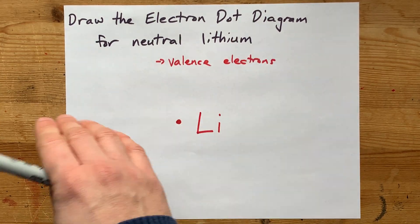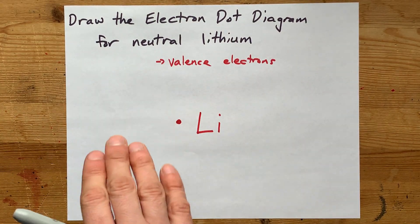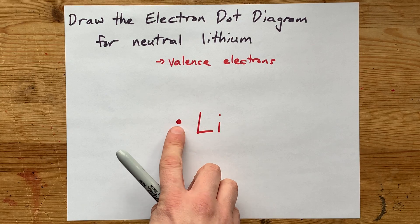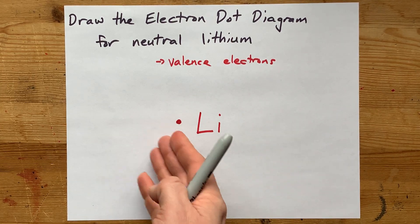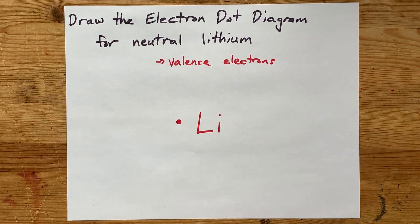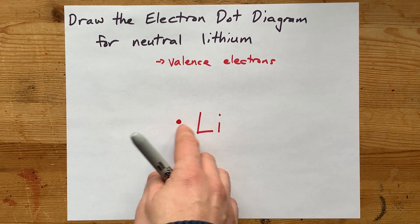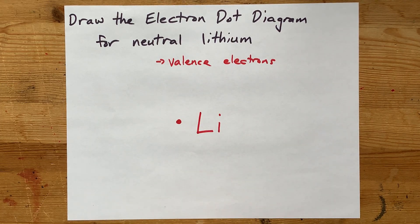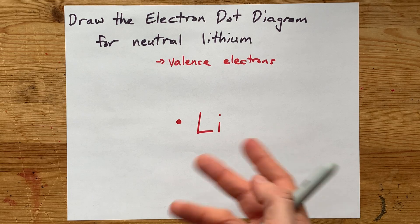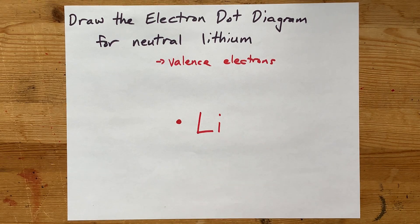The electron dot diagram for just neutral lithium not reacting is Li with the one single valence electron drawn as a dot. Honestly, it does not matter if you put it on the left, right, top, or bottom. It shouldn't matter to your teacher either, but do what they say. Thanks for being with me, and best of luck.